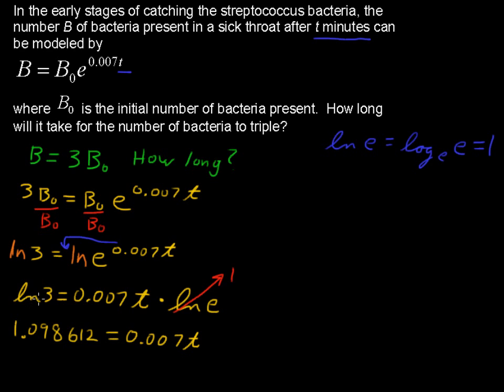Because you don't want to round until the end. So natural log of 3 is 1.098612. That's just gotten by plugging that into the calculator. Now we're going to divide each side by this coefficient, by 0.007.